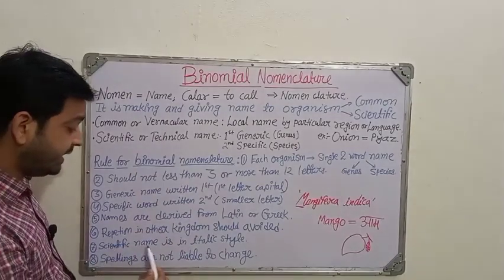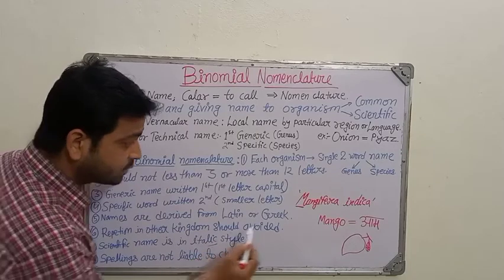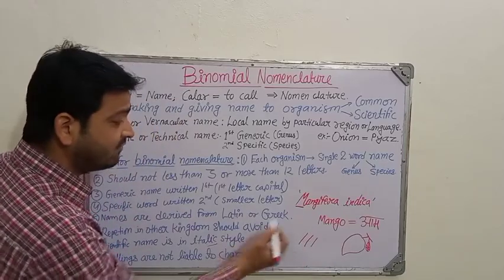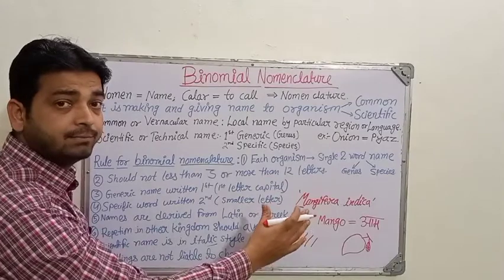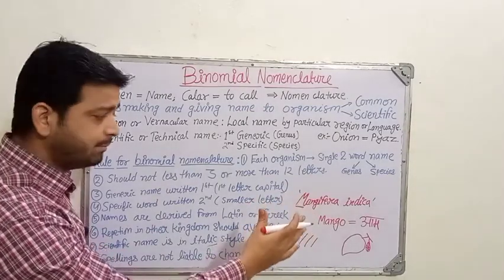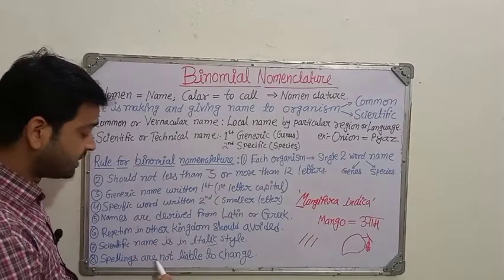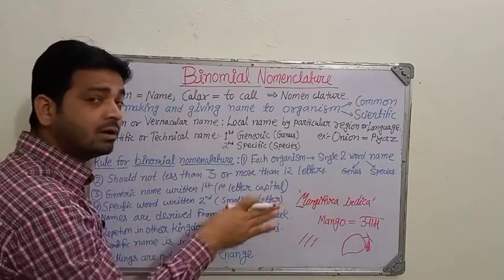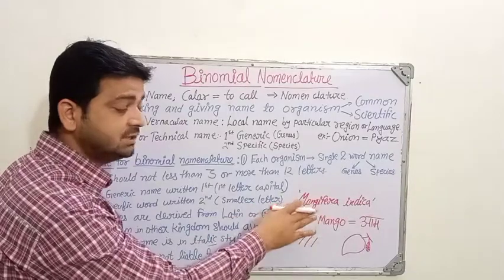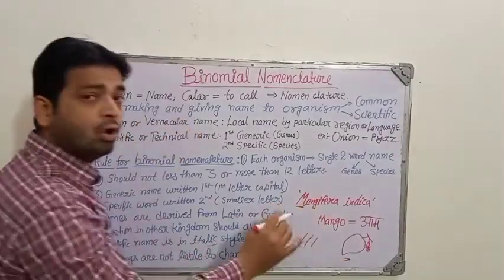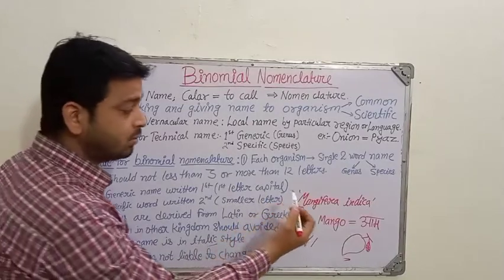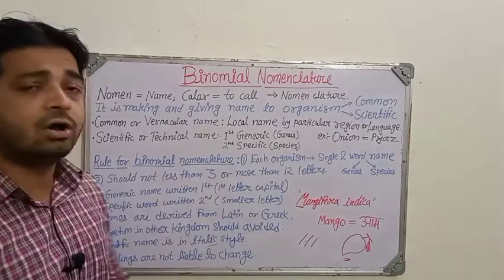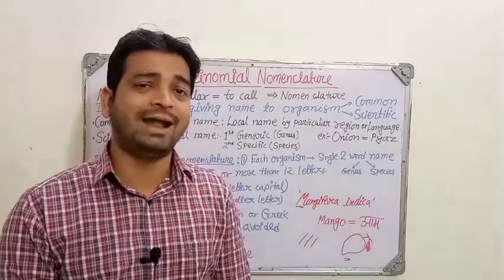Rule seven: the scientific name should be written in italic style — slightly slanted — so it can be identified as the name of an organism, whether microorganism, animal, or plant. Rule eight: spellings are not liable to change. Once a name like Mangifera has been given, we cannot change it, otherwise the organism would no longer be recognized by that name.